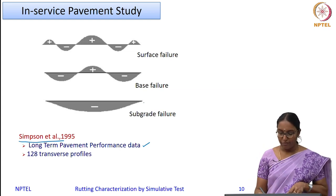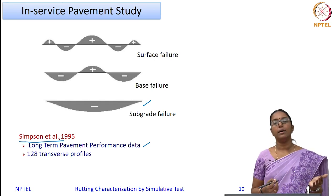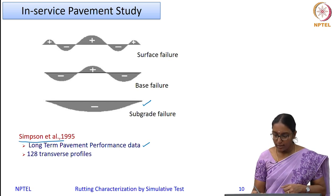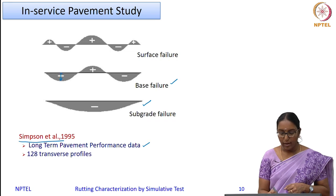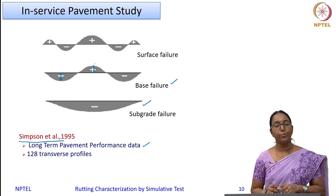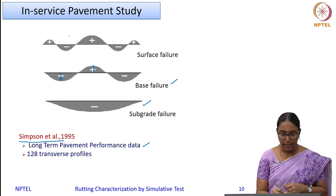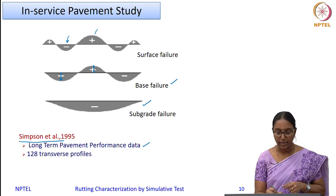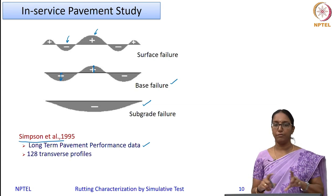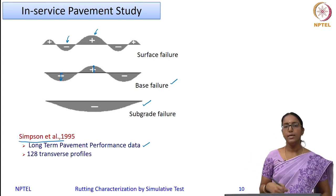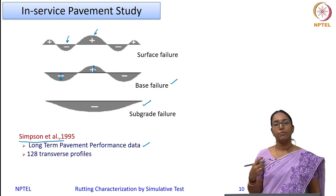Another classification was done by Simpson based on extensive data collected as part of the Strategic Highway Research Program — the Long Term Pavement Performance data — collected for over 128 transverse profiles on in-service pavements, with trenches taken at these locations to see which layer contributed to rutting. Simpson's classification: a single bowl rut on the top surface is attributed to subgrade failure; grooves with hums in between are attributed to base failure; whereas grooves with hums on either side are attributed to surface failure — failure of the top bituminous layer.